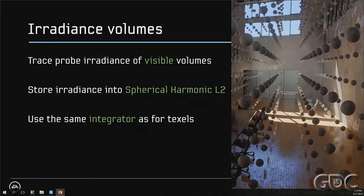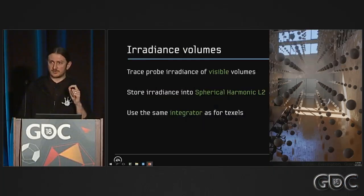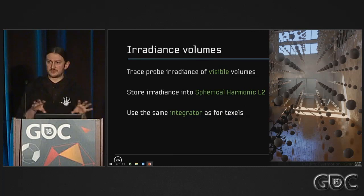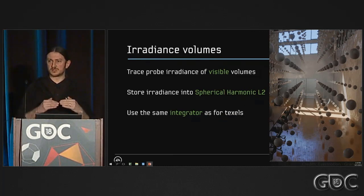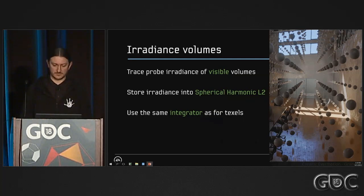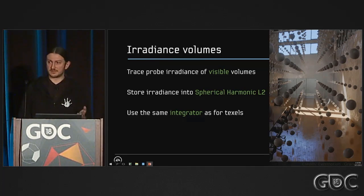We also implemented irradiance volumes. It's essentially the same code as light maps — the only difference is that instead of launching rays over a hemisphere, we launch rays over a full sphere from each probe position, and we store the result as a spherical harmonic L2 representation.